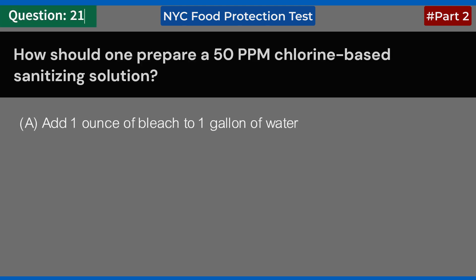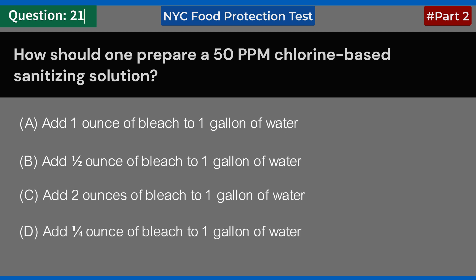How should one prepare a 50 ppm chlorine-based sanitizing solution? A. Add 1 ounce of bleach to 1 gallon of water. B. Add half an ounce of bleach to 1 gallon of water. C. Add 2 ounces of bleach to 1 gallon of water. D. Add 1 quarter ounce of bleach to 1 gallon of water. Answer: B. Add half an ounce of bleach to 1 gallon of water.